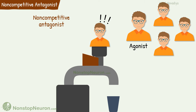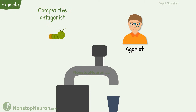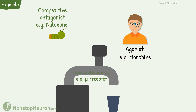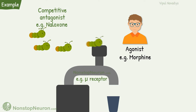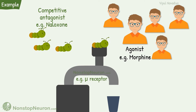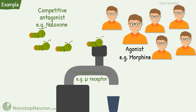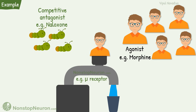So this is the basic difference between competitive and non-competitive antagonist. Now let's see examples. For mu opioid receptors, morphine is the agonist and naloxone is the competitive antagonist. They both compete with each other for binding with the receptor. When naloxone concentration is high, it occupies the receptor and prevents the action of morphine. If morphine concentration is increased, it displaces naloxone and activates the receptor.